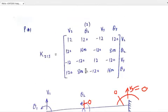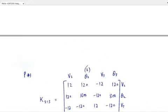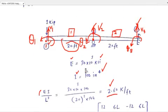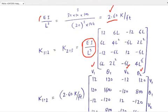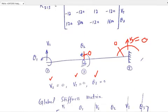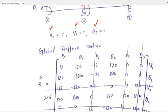Since there are 6 total possible degrees of freedom — V1, theta 1, V2, theta 2, V3, theta 3 — the global stiffness matrix will be of order 6 by 6. When assembling, label the rows and columns as V1, theta 1, V2, theta 2, V3, theta 3.